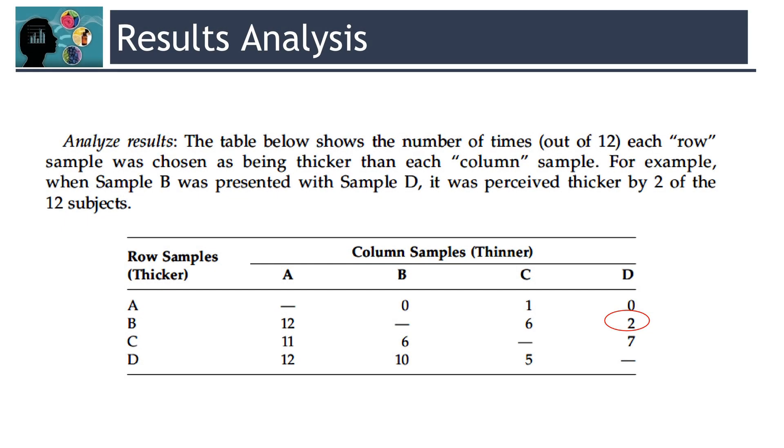In pairwise ranking test, you have to tabulate the data into a table. So, here you can see the table where we can tabulate the data. For an example, when sample B was presented with sample D, it was perceived thicker by two of the 12 subjects. Likewise, you can tabulate all the correct responses into this table.